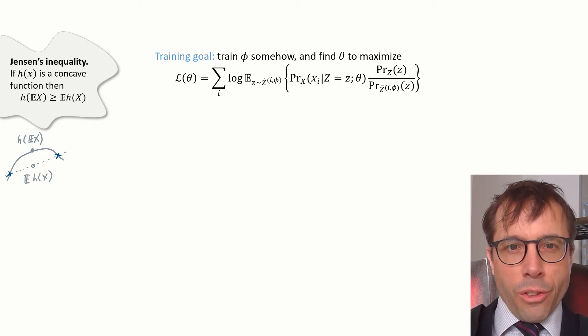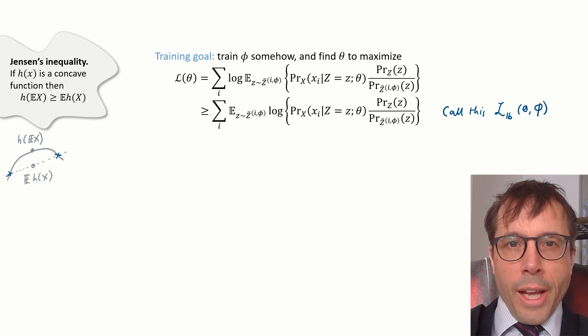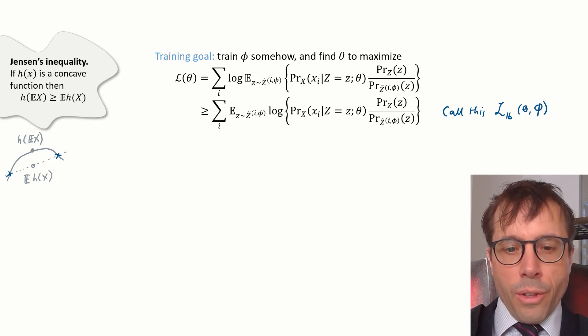We'll apply Jensen's inequality here to log, which is indeed a concave function, and here's what we get. The log likelihood, L(θ), is above or equal to this expression here. Let's call it L_LB(θ,φ). It stands for log likelihood lower bound. And this inequality holds for any θ and any φ.